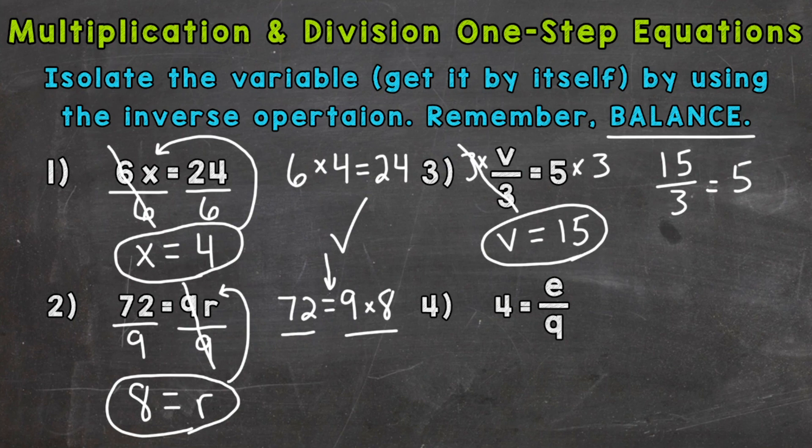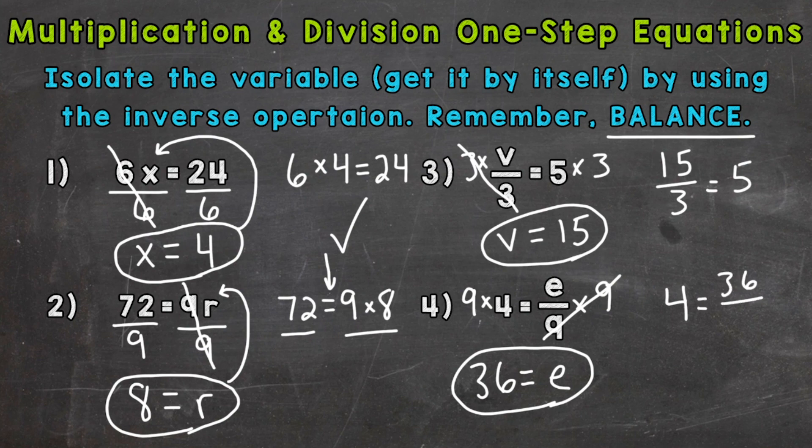And lastly, we have number four, where we have 4 equals e divided by 9. So we need to isolate the variable of e. We are dividing it by 9. So the opposite would be to multiply that side by 9. And whatever we do to one side, we have to do to the other. So multiply both sides by 9. These 9s cancel out and we are left with the isolated e and 9 times 4 gives us 36. So e equals 36. And we can double check here. So 4 equals 36 divided by 9. Both sides are equal. So we have the correct answer for the value of our variable e.